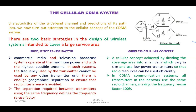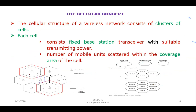The cellular structure of a wireless network consists of a cluster of cells. In the diagram shown, there are two clusters — one consisting of four cells and another of seven cells, labeled cell 1 through cell 4. Each cell operates at a different frequency, and each cell consists of one base station which both receives and transmits power with a suitable transmitting power level.